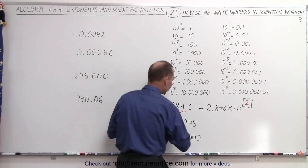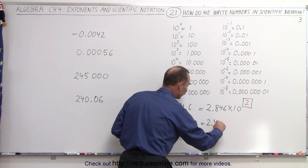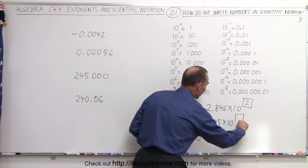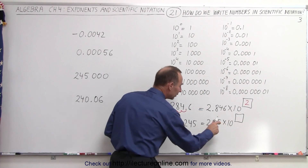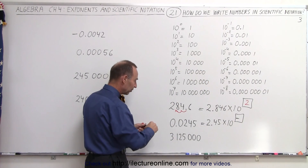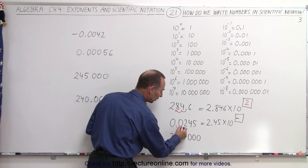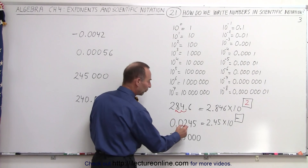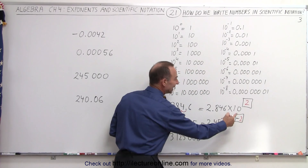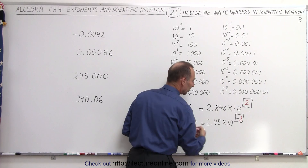On the next one, you want to write this number as 2.45 times 10 to the — and since we moved the decimal to the right, there's going to be a negative sign in front. Now we need to figure out how many spots. In this case it's 1, 2 spots. So therefore we need the number 2 there, but it's going to be negative 2 because we moved to the right. It's a positive exponent when we move to the left.